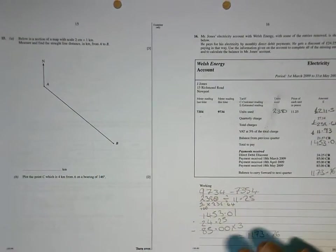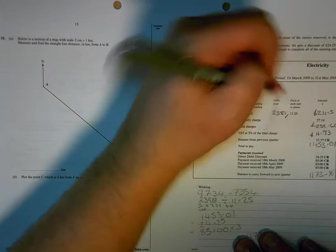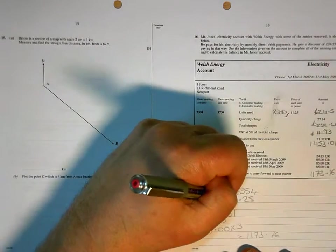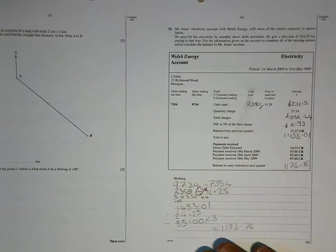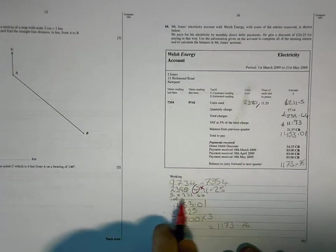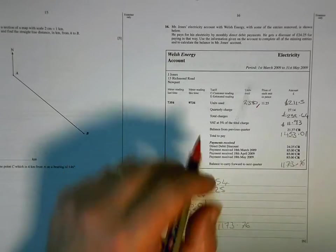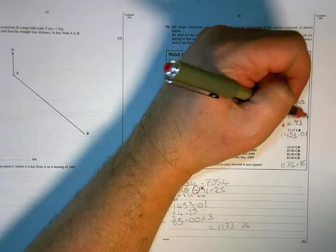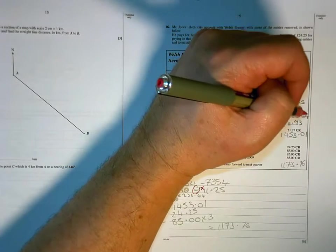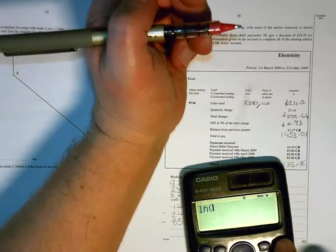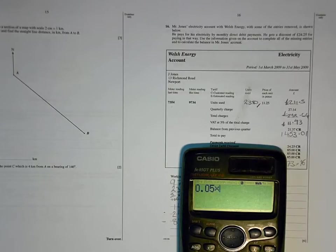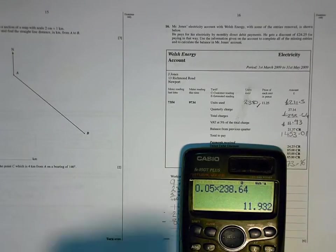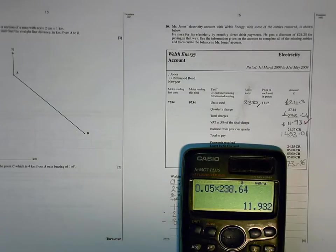Watch how I do that on the video clip. 2, 3, 8, 0 is correct. That needs to be multiplied. Every one of those units costs £11.25. So, you have to multiply those two together. Then, you do your 5% of that answer. So, 5% of that is £11.93. Let me just check. So, that's 5% times £238.64 equals £11.93. So, that's right. Well done.